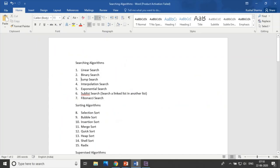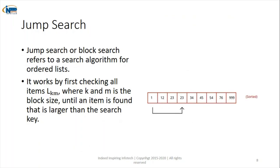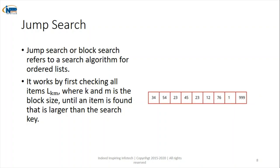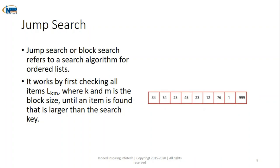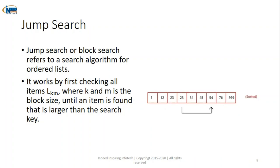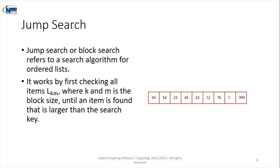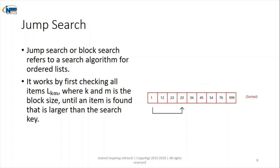The third algorithm is jump search. Jump, also called block search, means we select a block of elements — say three or four elements. At a particular time, we walk through four elements and sort them. Jump search works on a block, sorts it, and identifies whether the element is present in that particular block or not.